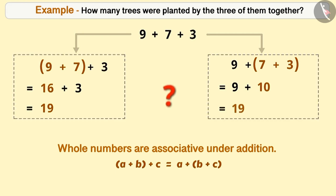Can you tell which of the given methods is easier? Think for a while. As you can see here, compared to (9 + 7) + 3, it is easier to solve 9 + (7 + 3). In this way, associative property makes addition of whole numbers easy.